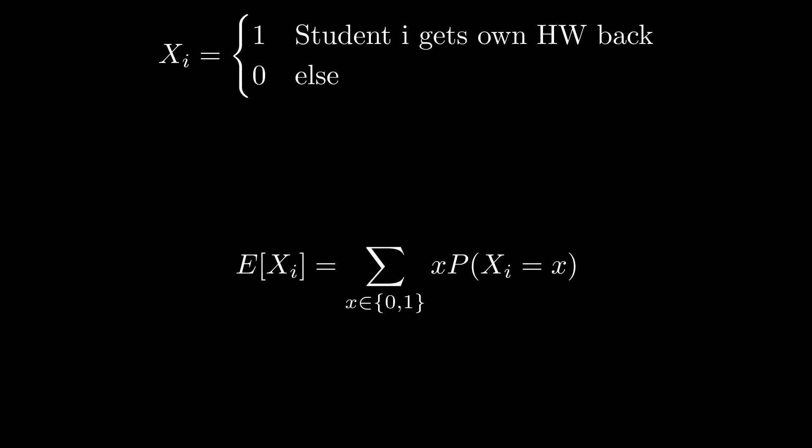E of X sub i is 1 times the probability student i gets their homework back, plus 0 times the probability they don't. That simplifies nicely.